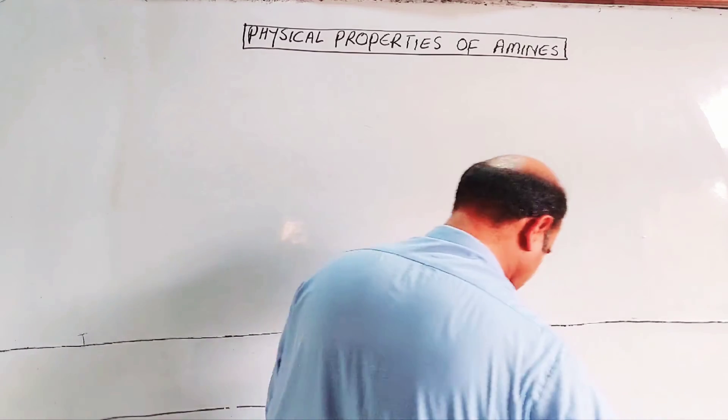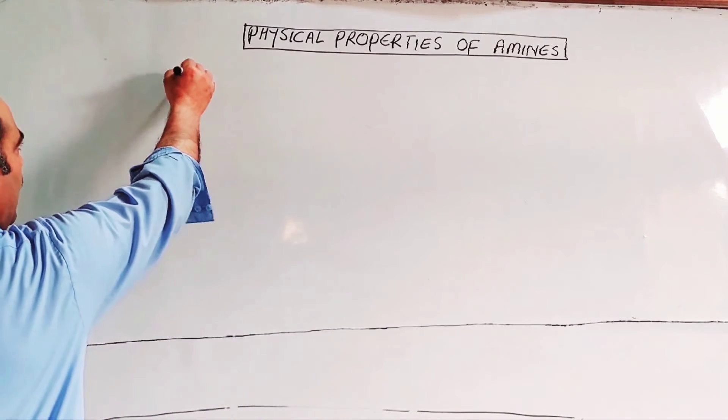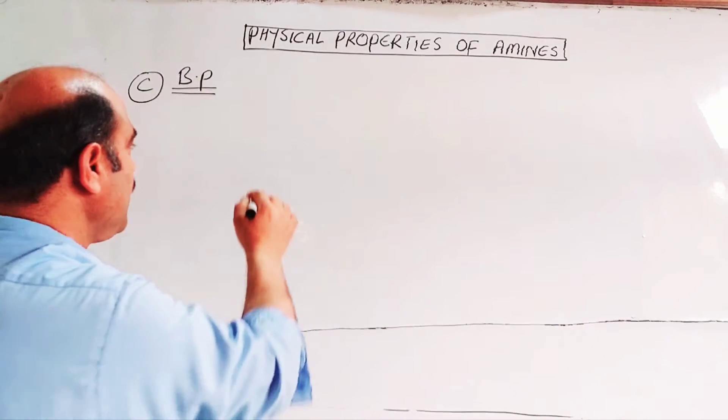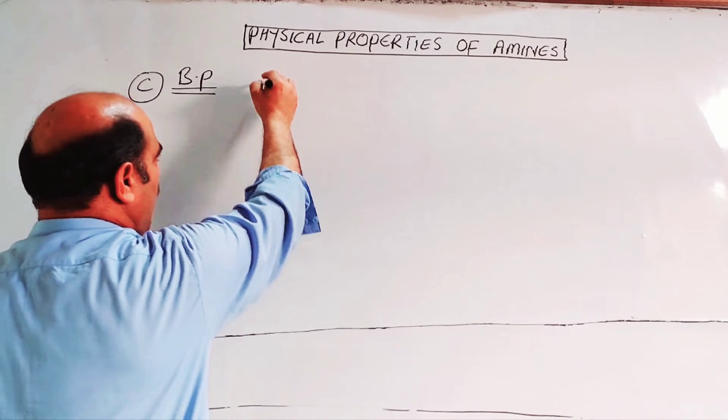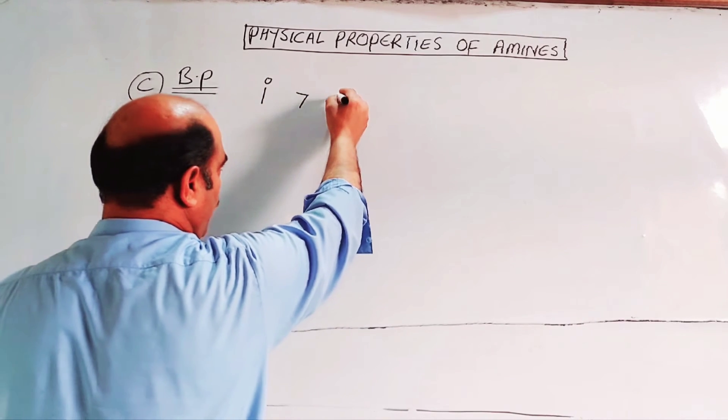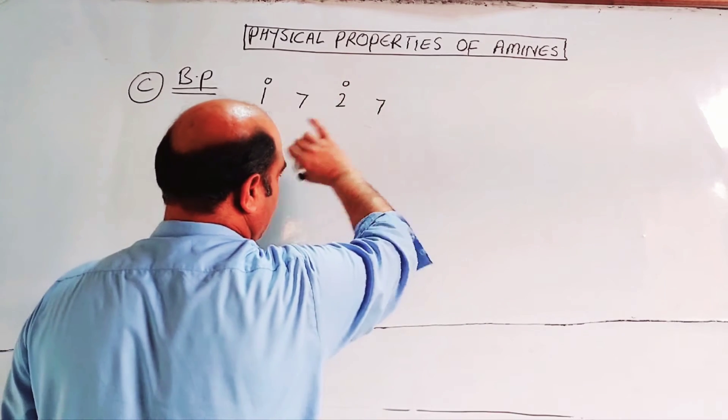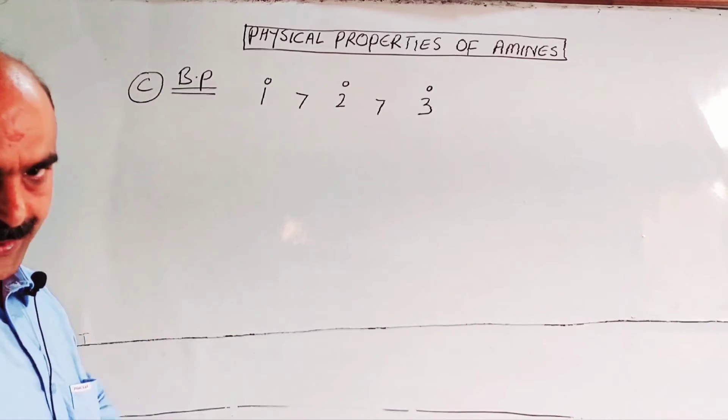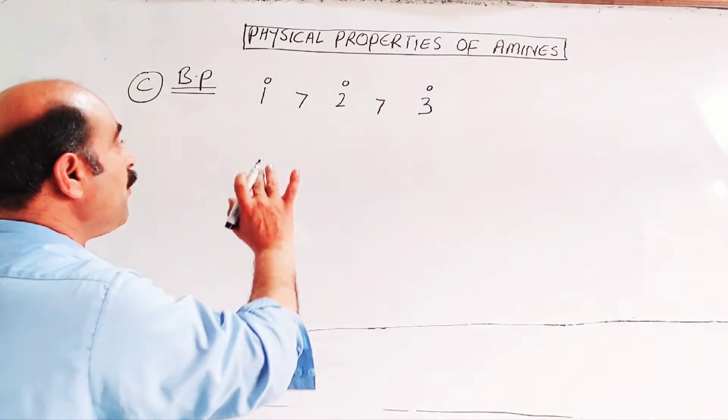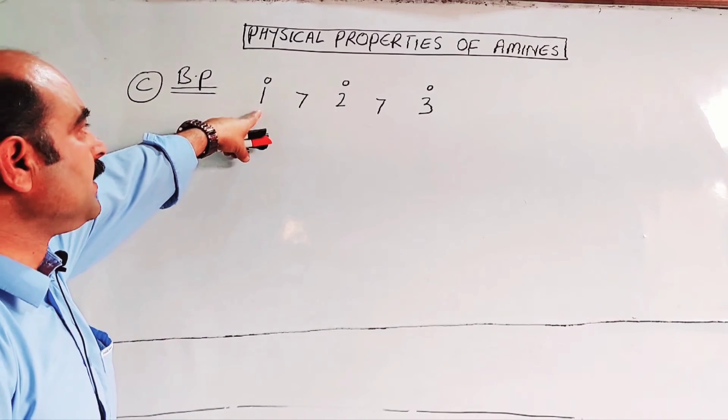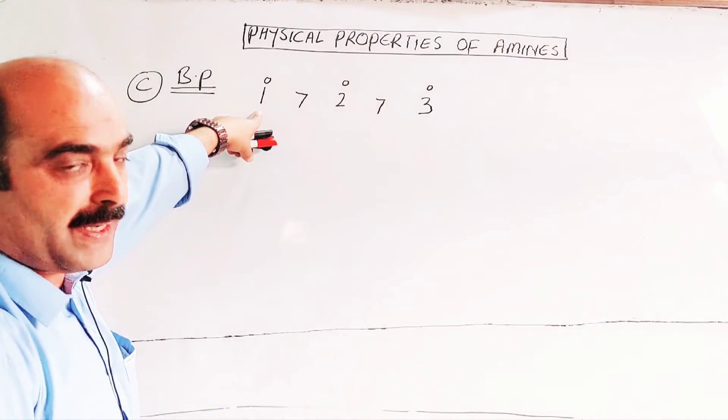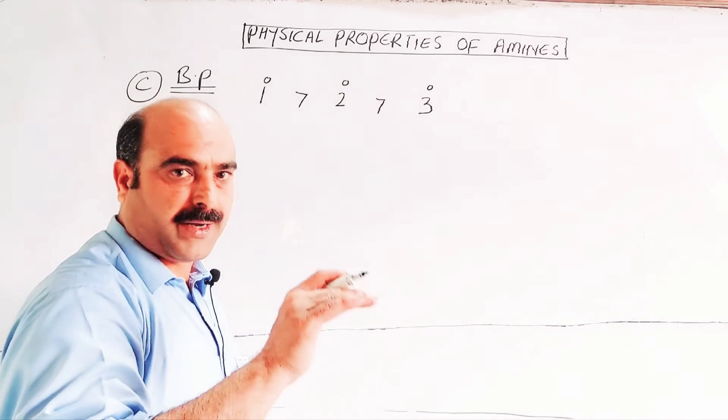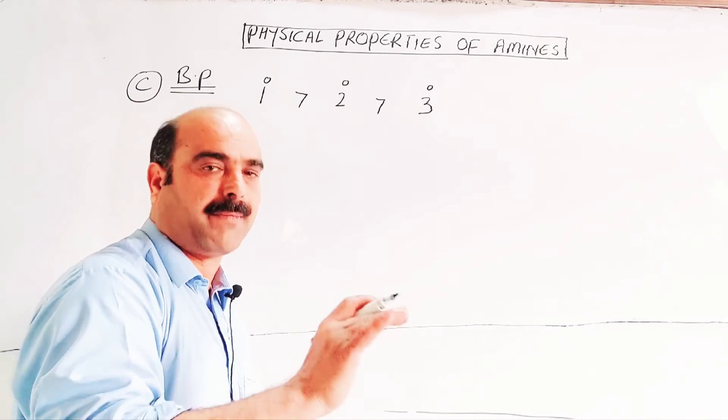The third portion is boiling points of amines. Primary amines, one degree amines, have higher boiling point values than secondary amines, and they have higher boiling point values than tertiary amines. One degree, two degree, three degree. The main reason: primary and secondary amines have hydrogen bonding, but tertiary amines have no hydrogen bonding with water or among themselves.